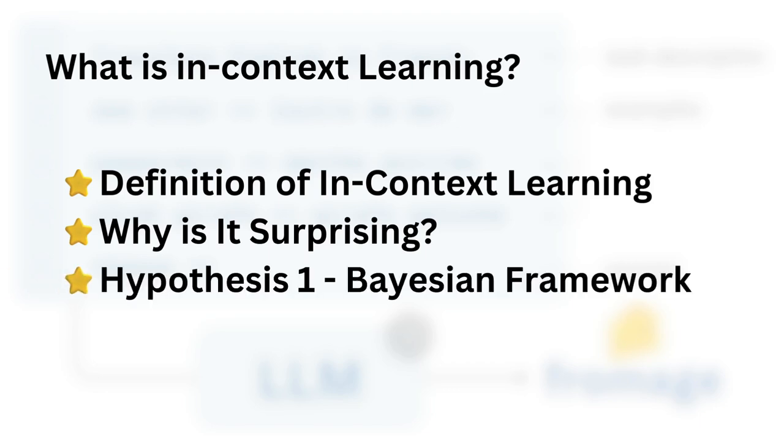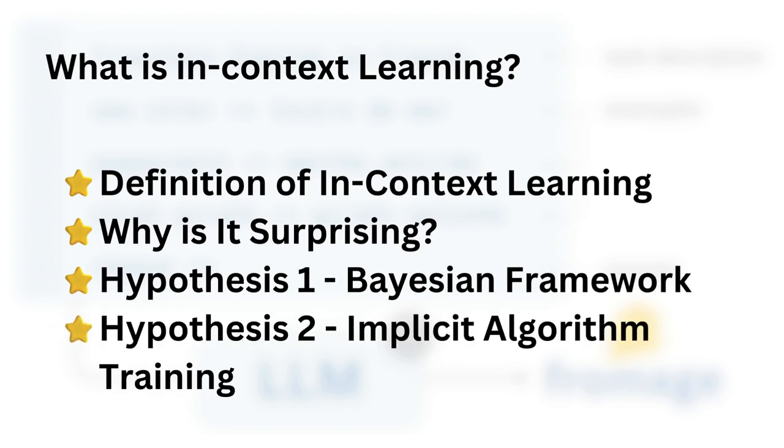We'll then explore the first hypothesis of how in-context learning works, which takes the form of a Bayesian framework. Finally, we'll explore a second connected hypothesis which hints towards large language models training in some ways algorithm implicitly during in-context learning tasks.